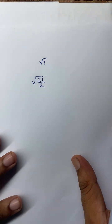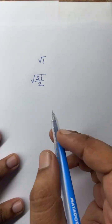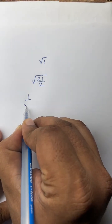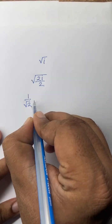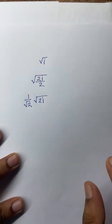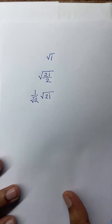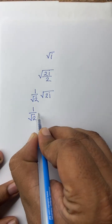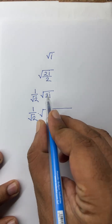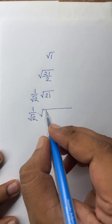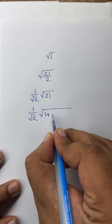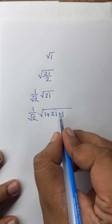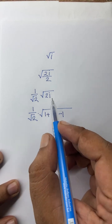Then I can say here it will be 1 over square root 2 times square root of 2i. Then I can say here it will be 1 over square root 2 times square root of 2i. It will be 1 plus 2i minus 1 — I add 1 and again I subtract 1 — so we'll find out the previous line again.